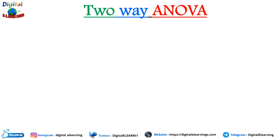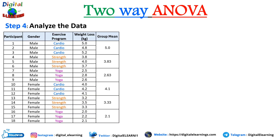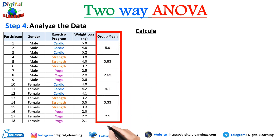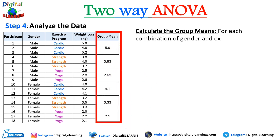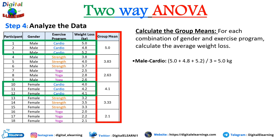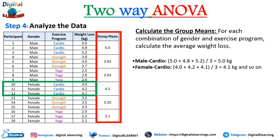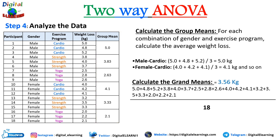Step four: analyze the data. We calculate the group mean for each combination of gender and exercise program by averaging the weight loss values. For male cardio, we take the average of 5, 4.8, and 5.2 divided by 3, which equals 5 kg. Similarly for female cardio, 4, 4.2, and 4.1 divided by 3 gives 4.1. We do this for all combinations, then calculate the grand mean — the average of all weight loss values — which comes to 3.56.